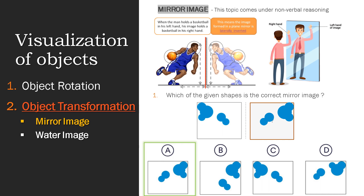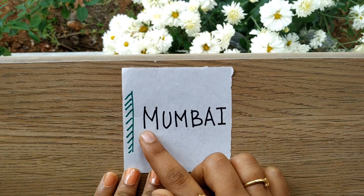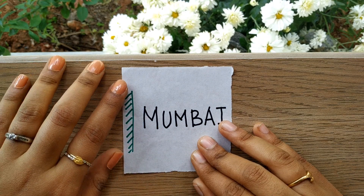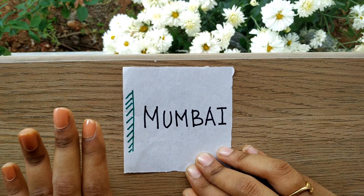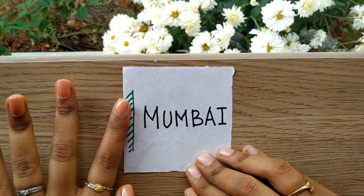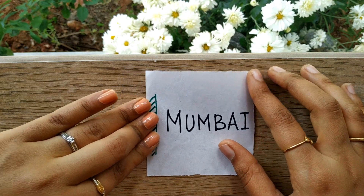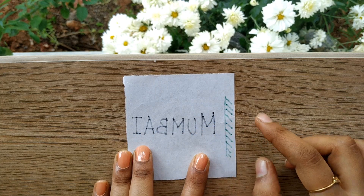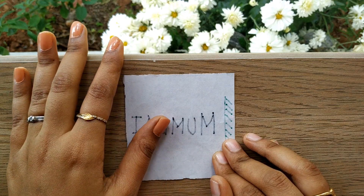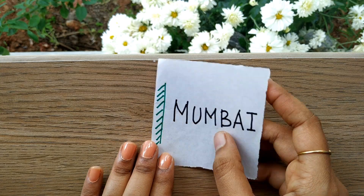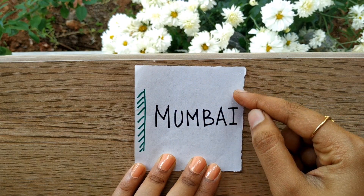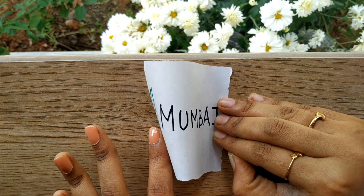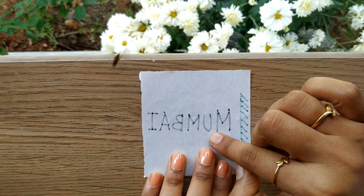Let's find the mirror image of the word 'Mumbai' using the paper trick. If the mirror is placed in a particular direction, hold the mirror portion and turn the paper that side — now you have the mirror image of Mumbai when the mirror is placed in that direction. Let's try with a different mirror direction: hold the mirror and turn the paper to that side, and you get the mirror image for that orientation.